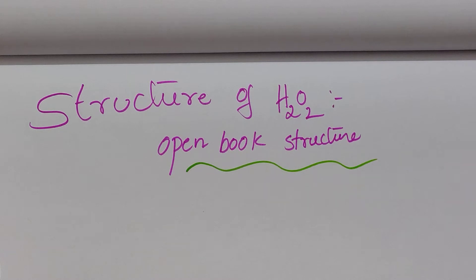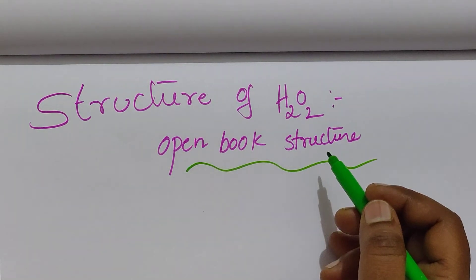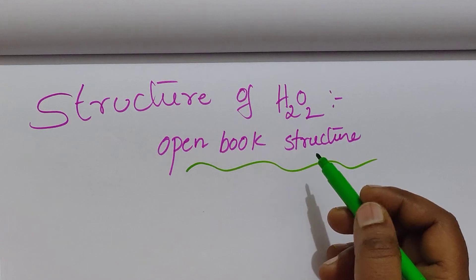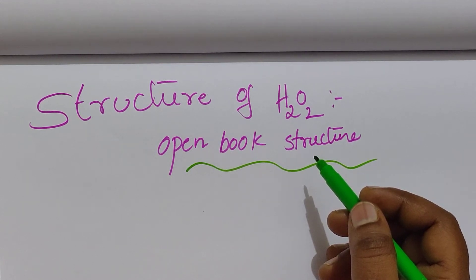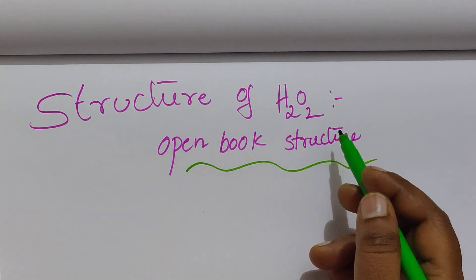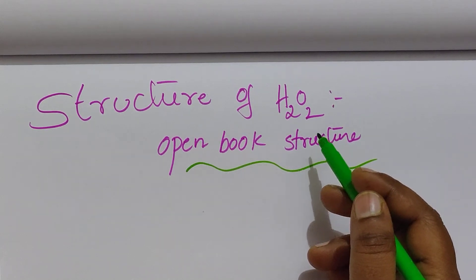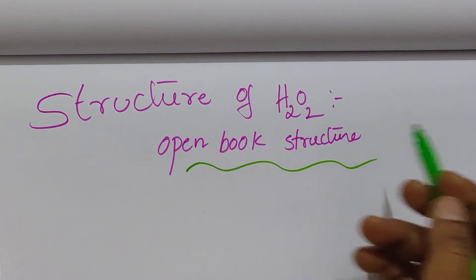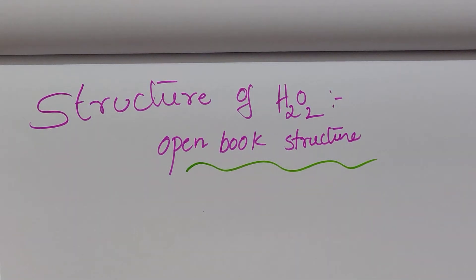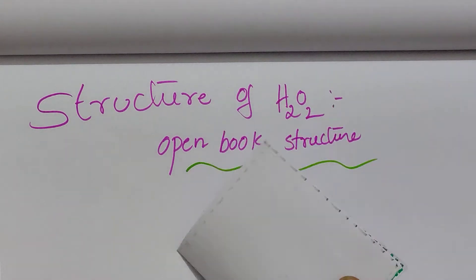Now we are going to discuss the structure of hydrogen peroxide. Hydrogen peroxide is the open book structure. H2O2 is also called an anti-chlor, has bleaching action, and is used as an antiseptic. Now we have to discuss about the structure.